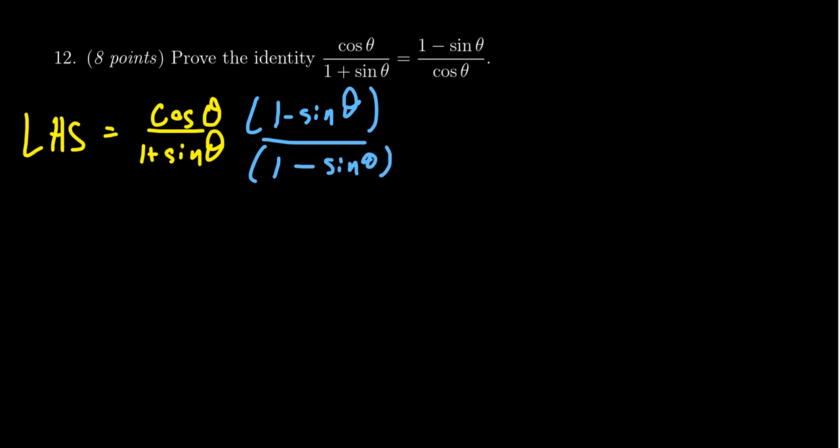In the numerator, I'm going to leave it factored for a little bit, just for a moment to see what happens. Cosine theta times one minus sine theta. I'm going to multiply the denominator because that's the conjugate in play here: one plus sine theta times one minus sine theta.